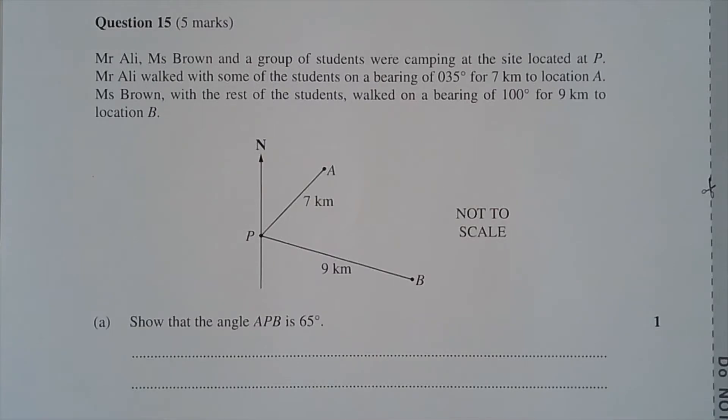Question 15. Mr. Ali, Ms. Brown and a group of students were camping at the site located at P. Mr. Ali walked with some of the students on a bearing of 35 degrees for 7 kilometres to location A. Ms. Brown, with the rest of the students, walked on a bearing of 100 degrees for 9 kilometres to location B.